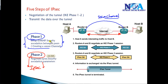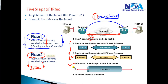Before Phase 2 can apply policies, Phase 1 must build a secure channel. Once that's done, Phase 2 applies the IPSec parameters. After IKE Phase 1 and Phase 2 are complete, the devices exchange information via IPSec tunnels, and finally, once the information is exchanged, the tunnels are terminated.